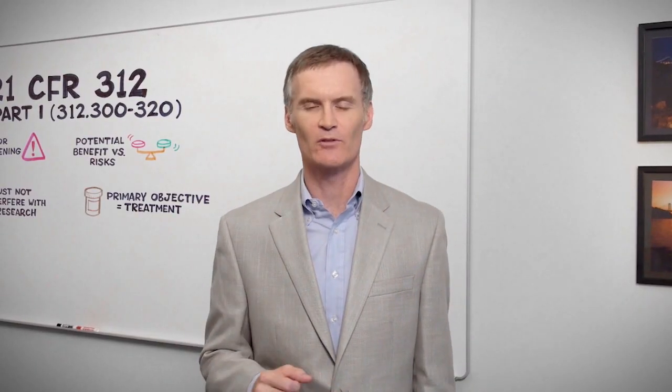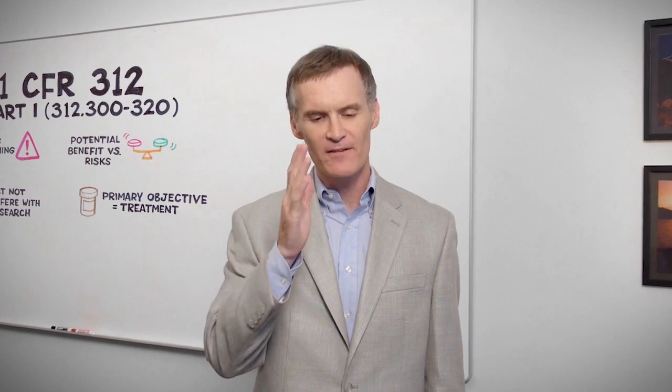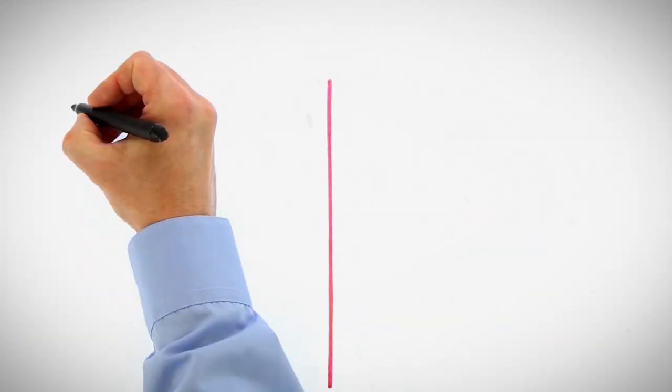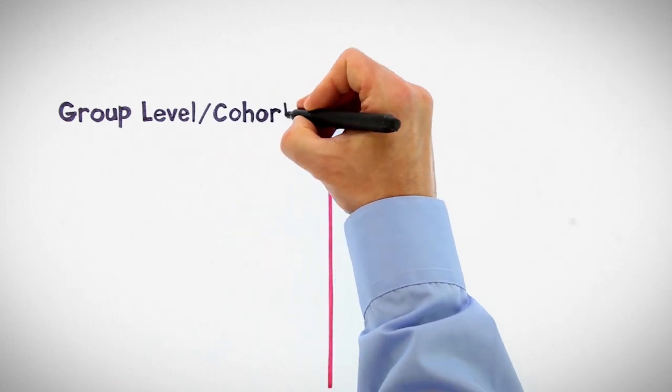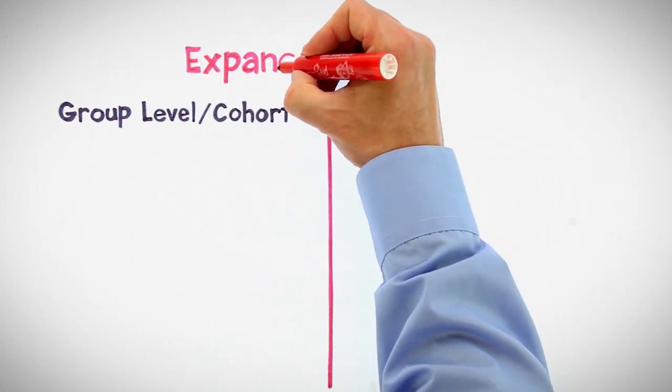Think of a blank sheet of paper to represent the world of expanded access. Imagine a big fat line right down the middle of your paper — you've got a left side and a right side of the page. These are the two very different types of expanded access. On the left side is a classic form: we call it group-level or cohort expanded access.